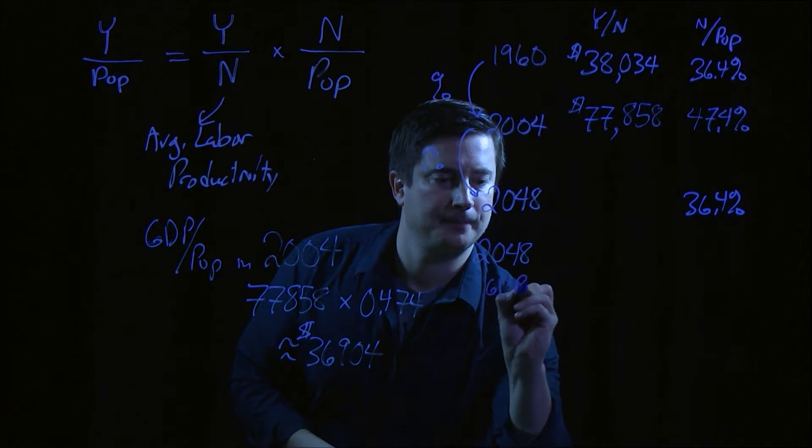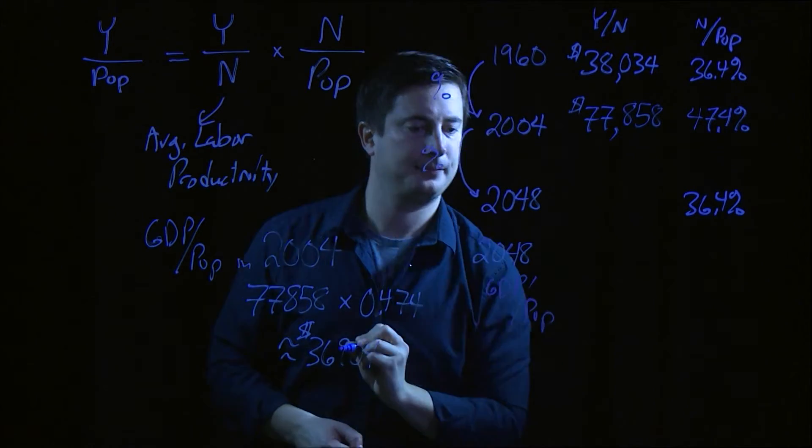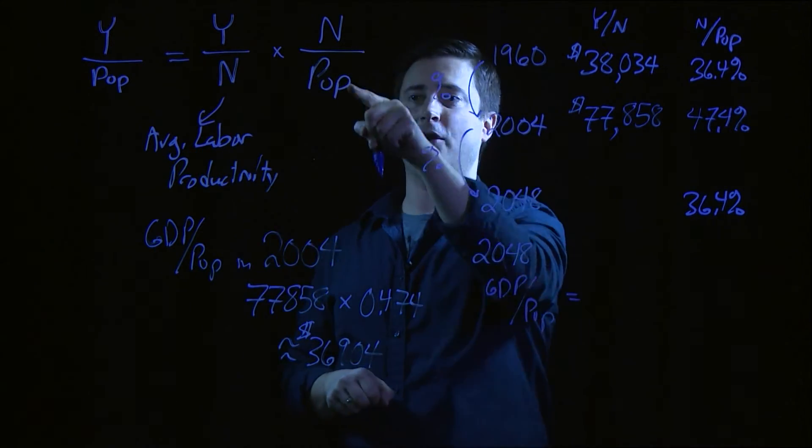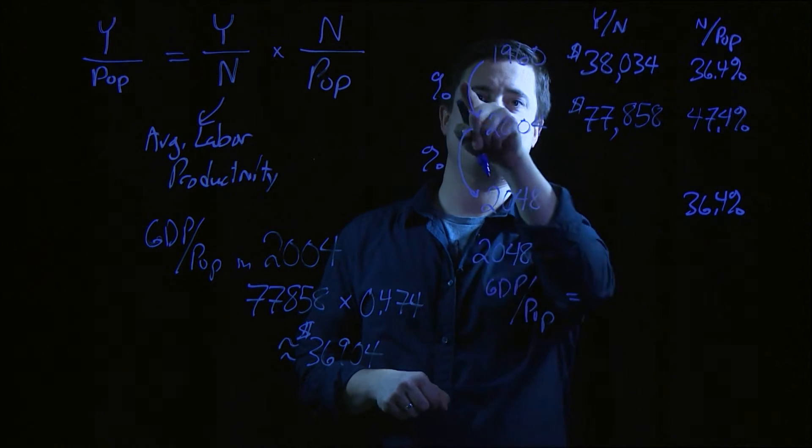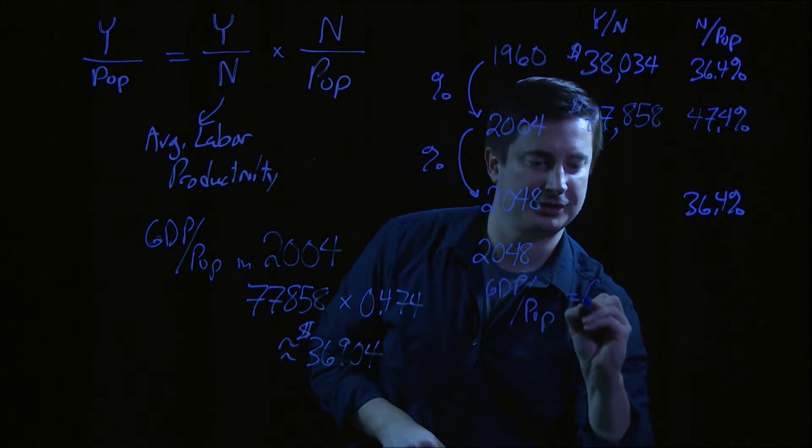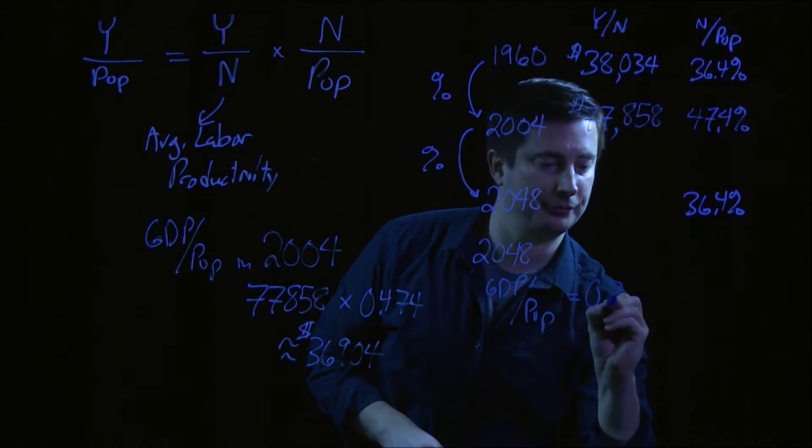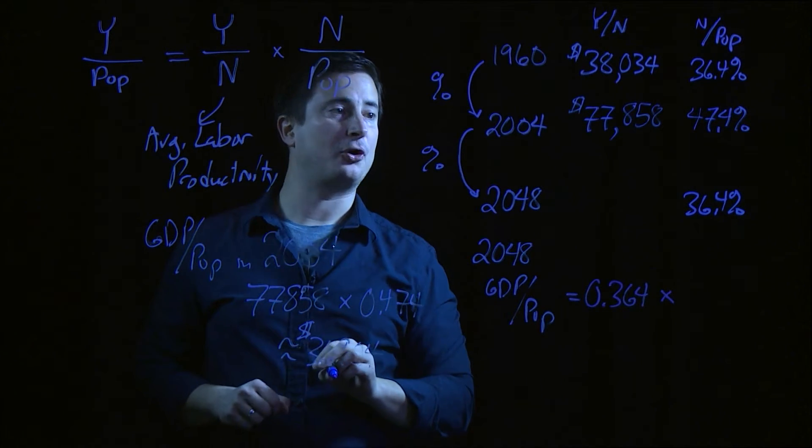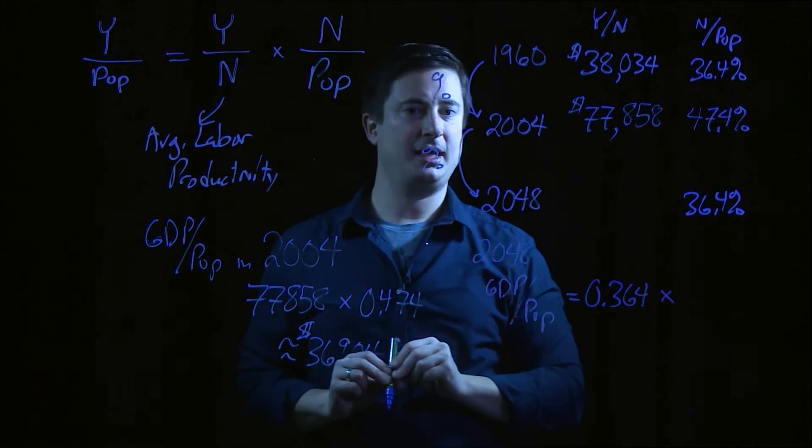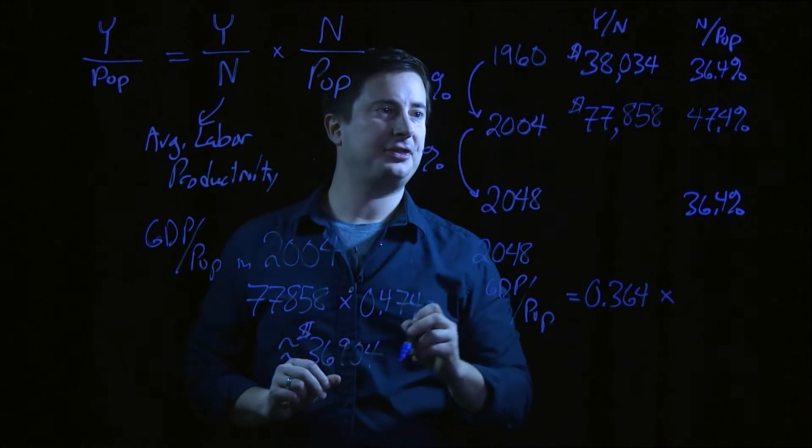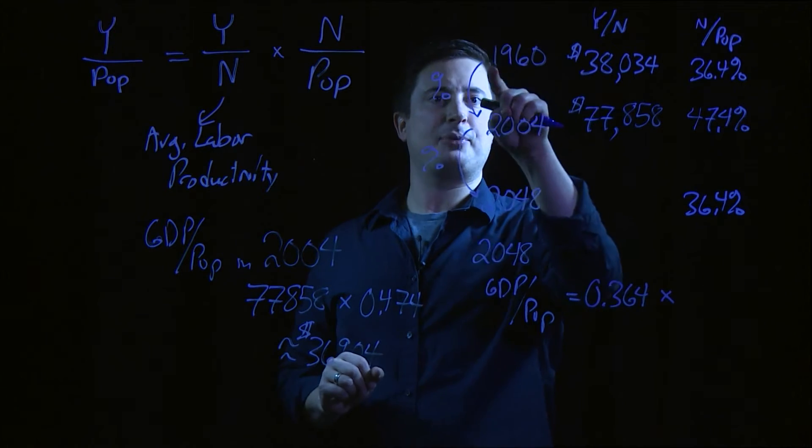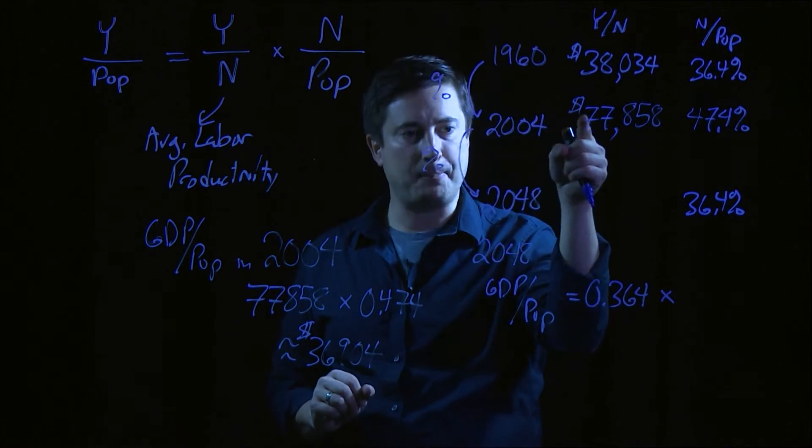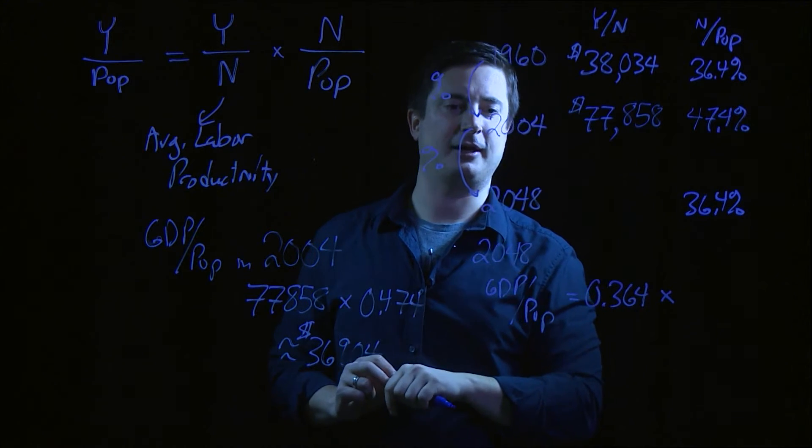So GDP per capita is going to be equal, and let's reverse it. I'll say N over POP we know is going to go back to the original 1960 level. So that's 0.364 times labor productivity in 2048. We can think about that as simply a percentage increase of the same amount from 1960 to 2004 applied to the next 44 years.